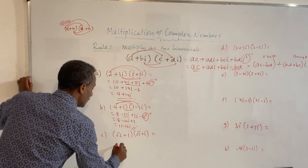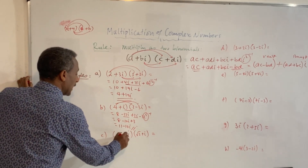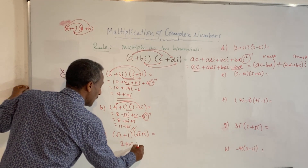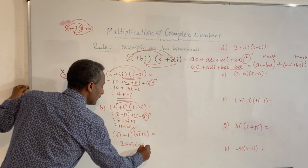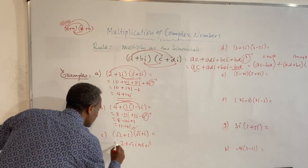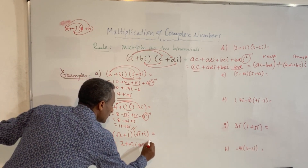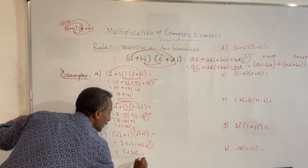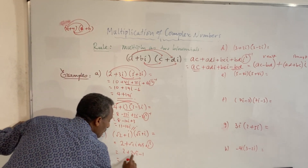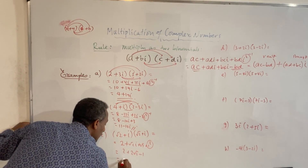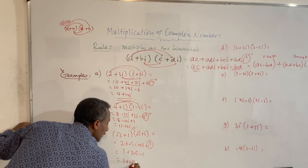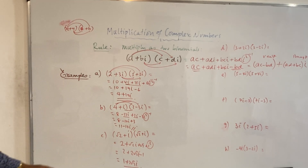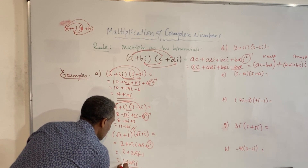Root 2 times root 2 is 2. Plus root 2 times i is root 2 i. Then i times root 2 is plus root 2 i. And i times i is i squared, which equals minus 1. So we get 2 plus root 2 plus root 2, which is 2 root 2, minus 1. Two minus 1 is 1. So the product is 1 plus 2 root 2 i.